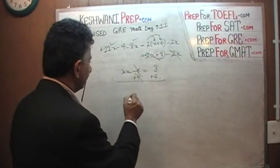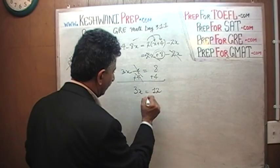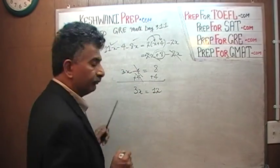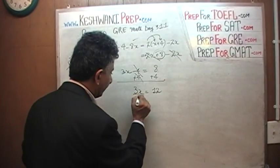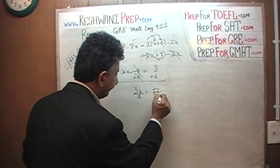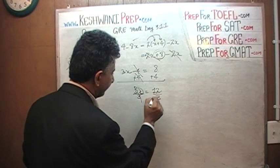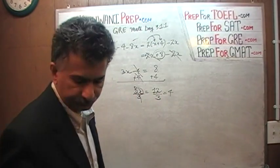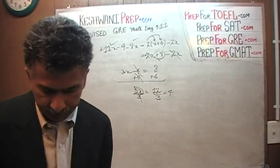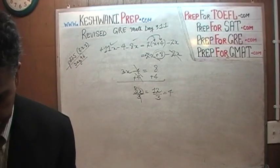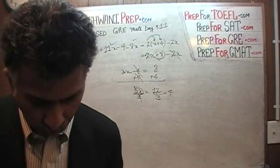Here we have 11x and negative 8x. Positive 11x and negative 8x gives us 3x minus 4 equals 8. Adding 4 to both sides gives us 3x equals 12. If 3x equals 12, we divide both sides by 3, we get x by itself and x equals 4. That's all. That was very straightforward, very simple.